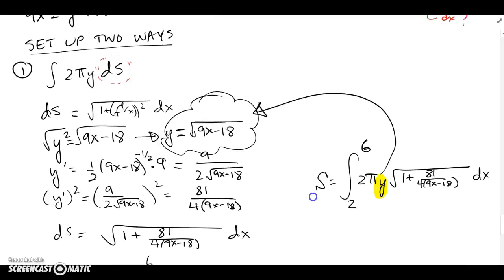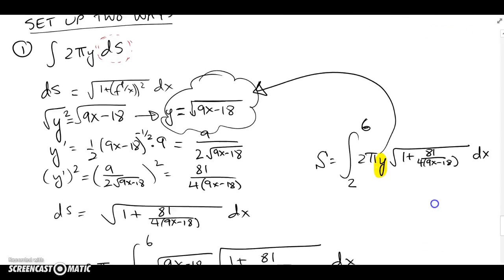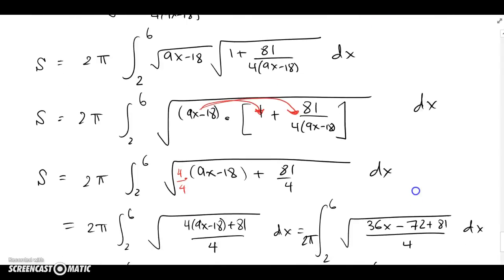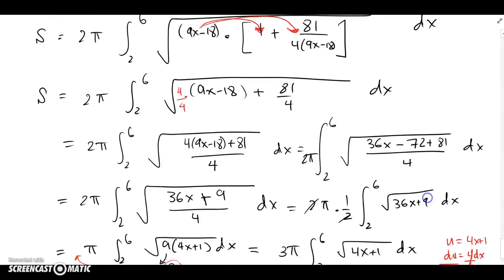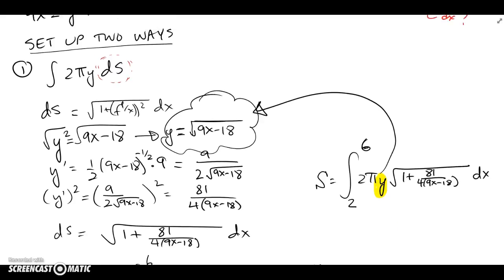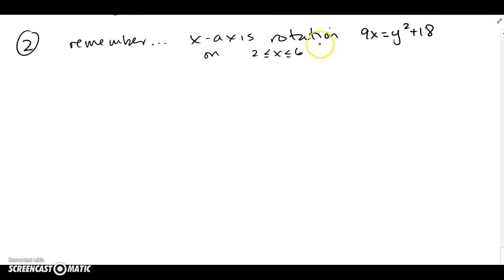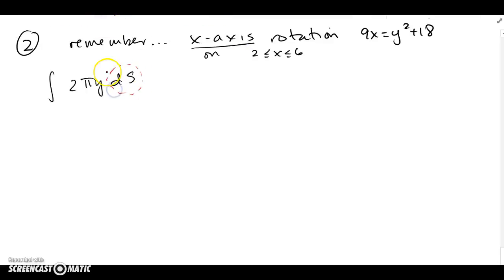Since we were given x-values, we chose to do a DX problem. In the process we had to isolate y, find y prime, and work through the algebra — it was busy but not difficult. That's the DX setup giving us 49π for the surface area. Now let's set it up as a DY problem, because x is easy to isolate here. We'll get the same answer, but let's see how that works.